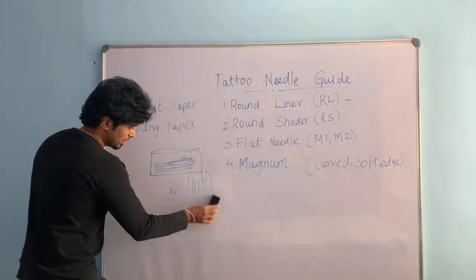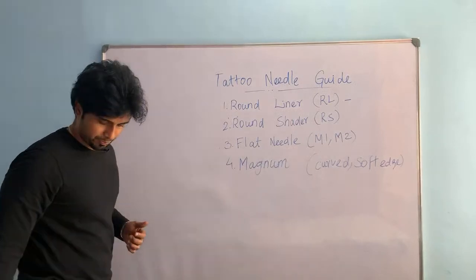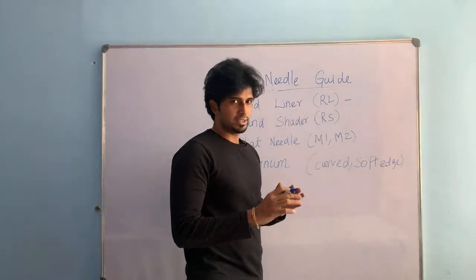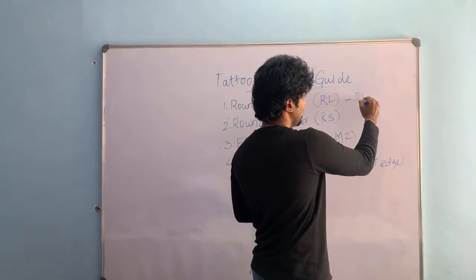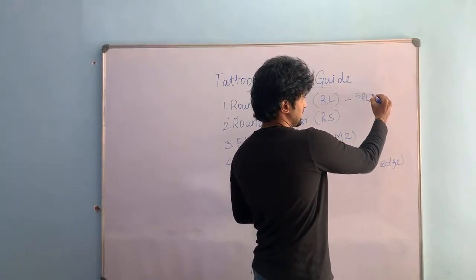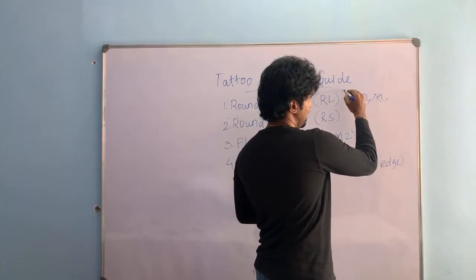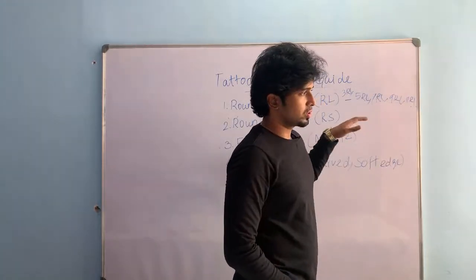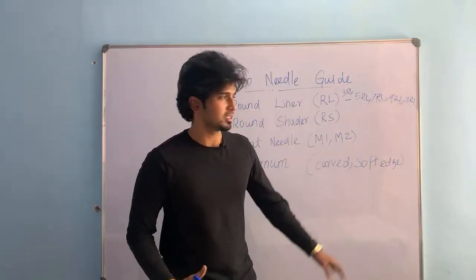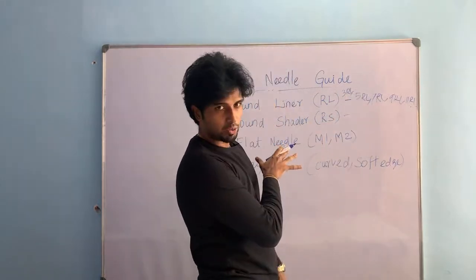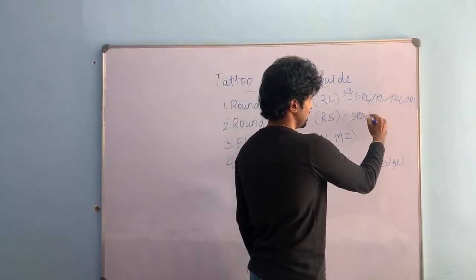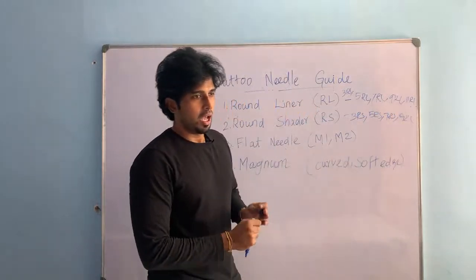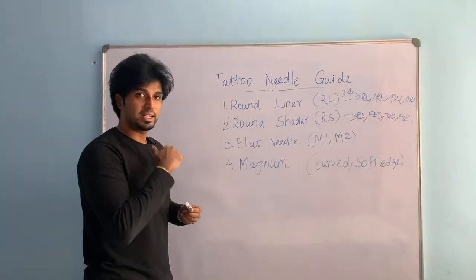Now let's talk about the round liner and round shader varieties. For round liner: 3RL, 5RL, 7RL, 9RL, 11RL, and so on — this configuration varies brand to brand. For round shaders, similarly: 3RS, 5RS, 7RS, 9RS. These configurations depend on the brand.